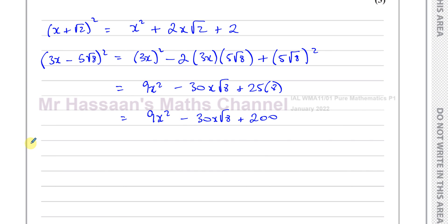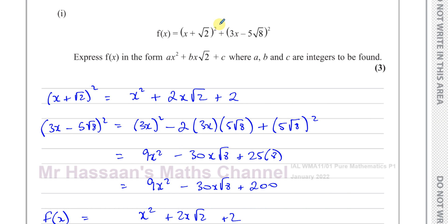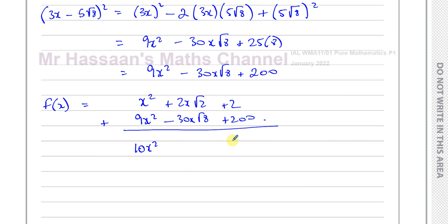Now I need to add them together. So f(x) is going to be the sum of those two. f(x) is going to be x² + 2x√2 + 2 plus 9x² minus 30x√8 + 200. I can make it as a column sum even. Before I do that, you see we've still got something else to do. This is √8, and we have to give the answer in terms of √2. So I need to change this √8.